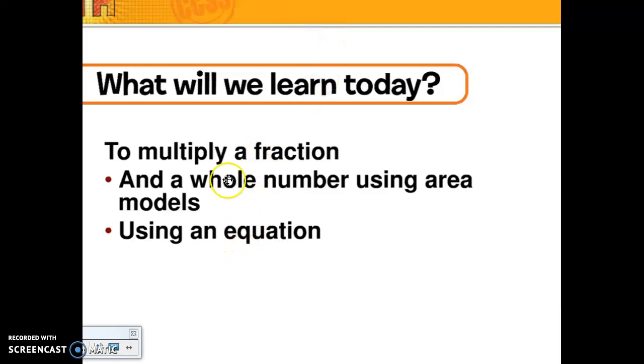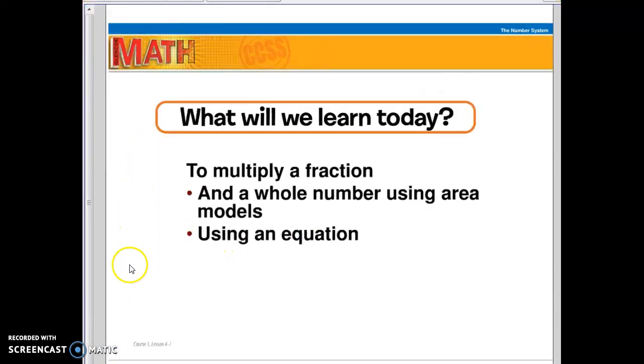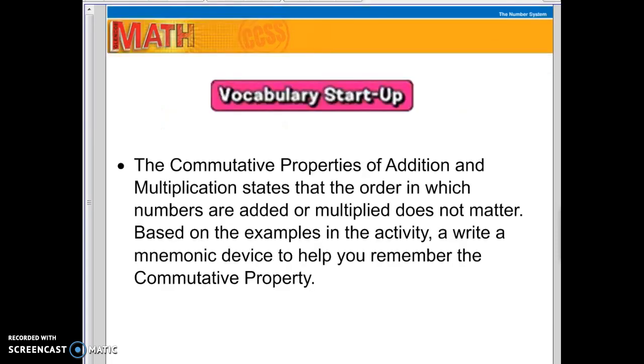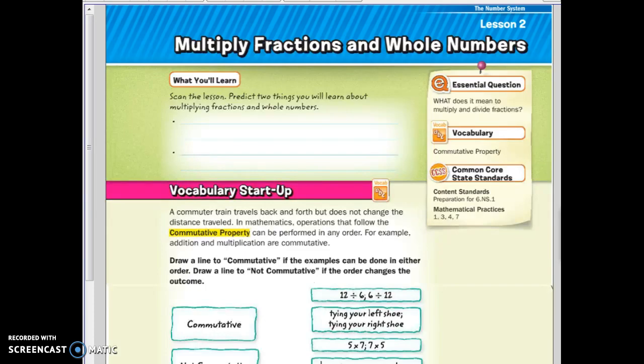Today's lesson was on multiplying fractions by whole numbers. We talked a little bit about the commutative property. The commutative property states that the order in which numbers are added or multiplied does not matter. However, we'll see that it does not work with division or subtraction. And that's going to help us today when we're multiplying fractions.